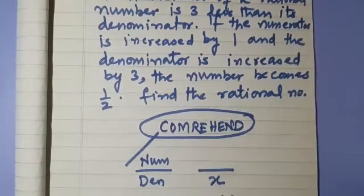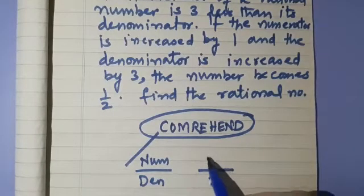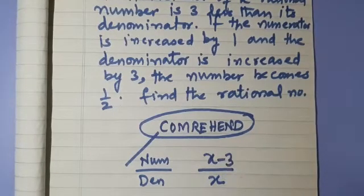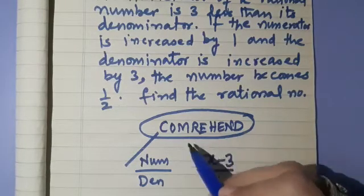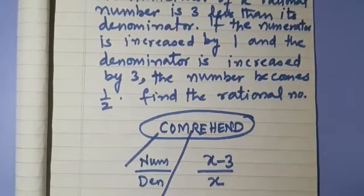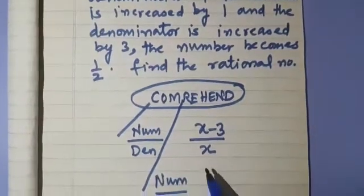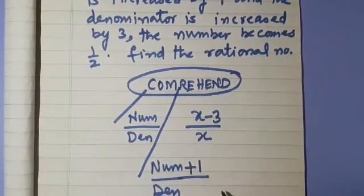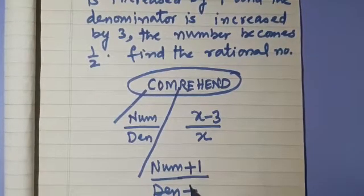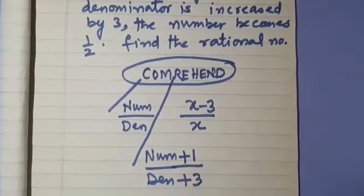As per the given condition, the numerator will be x minus 3. Now for the second condition: if the numerator is increased by 1, that gives us numerator plus 1, and the denominator is increased by 3, that means denominator plus 3.